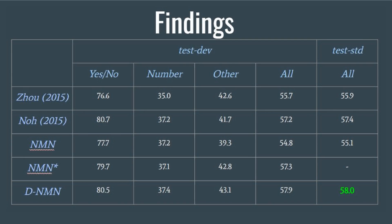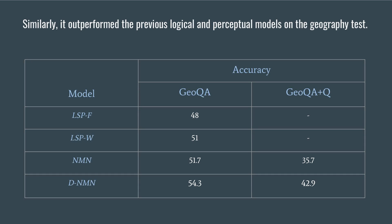The dynamic neural module net, DNMN, outperforms all previous approaches including NMN, the parameter tying model, and NMN*, the reimplementation using an image processing pipeline, on the VQA dataset. DNMN also outperforms both LSPF, a purely logical model, and LSPW, the model with learned perceptual predicates, on the original dataset, as well as a fixed structure NMN under both GQA and GQA+Q.